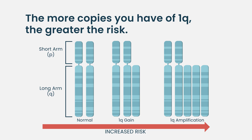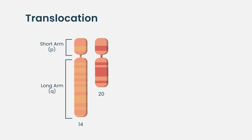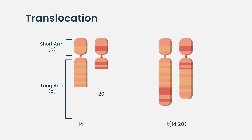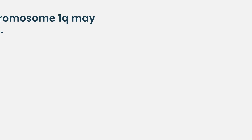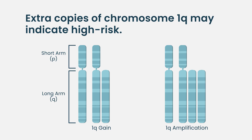Depending on which chromosome you have in excess, the genes it contains and their functions are going to impact the myeloma cell. We have our historic FISH results that capture translocations — where two parts of chromosomes have swapped with each other. Some of those are standard risk, some are high risk, depending on what we've learned over the last 10-plus years of myeloma genetics. Then came the discovery that having an extra copy or several of chromosome 1 could have potential high-risk behavior.